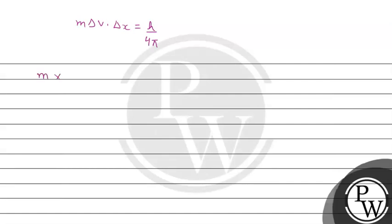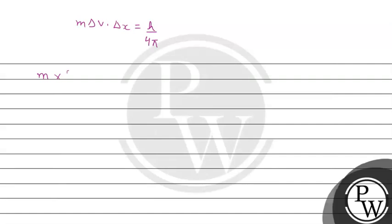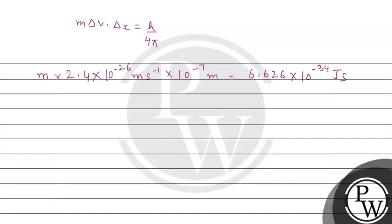Mass m is what we have to find. Delta v value is given to us in the question — velocity and position of the particle in space are given. So we substitute: m × 2.4 × 10⁻²⁶ m/s × 10⁻⁷ m = 6.626 × 10⁻³⁴ joule·second divided by 4π.